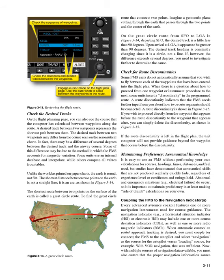Check the desired tracks on the flight planning page: you can also see the course that the computer has calculated between waypoints along the route. A desired track between two waypoints represents the shortest path between them. The desired track between two waypoints may differ from the course seen on the aeronautical charts; in fact, there may be a difference of several degrees between the desired track and the airway course. Some of this difference may be due to the method in which the FMS accounts for magnetic variation. Some units use an internal database and interpolate, while others compute all values from tables. Unlike the world as printed on paper charts, the Earth is round, not flat, so the shortest distance between two points on the Earth is not a straight line — it is an arc.